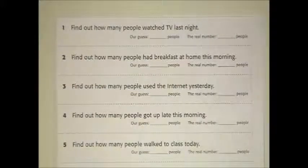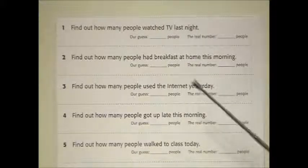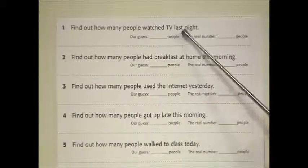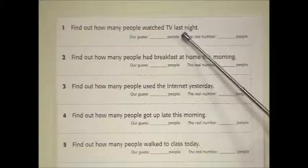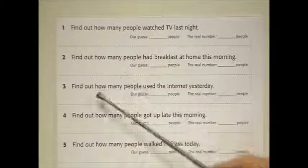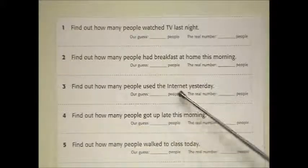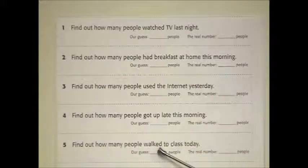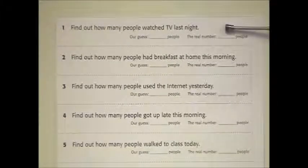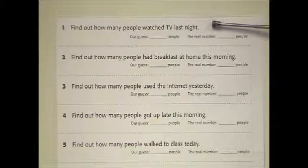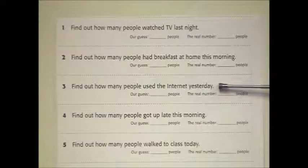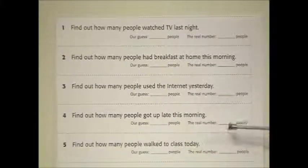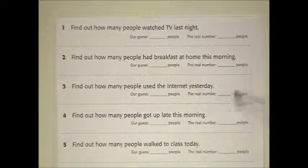In this mid-level activity for the past simple tense, we'll use a two-stage activity. First, students will guess how many people did a certain thing in the past — for example, 'Find out how many people watched television last night' or 'Find out how many people used the internet yesterday'. Once that's finished, students will get up and go around polling the class. For feedback, the teacher will gather the students and chart the results.